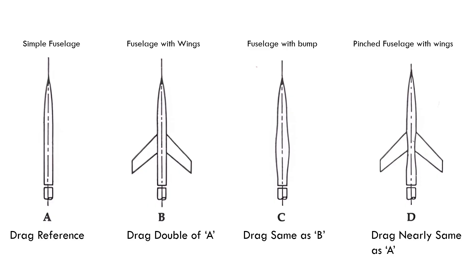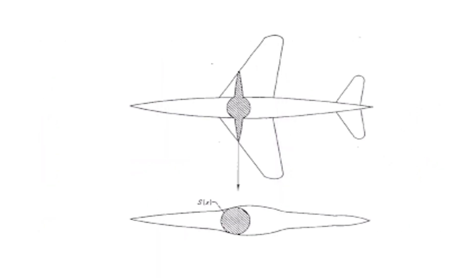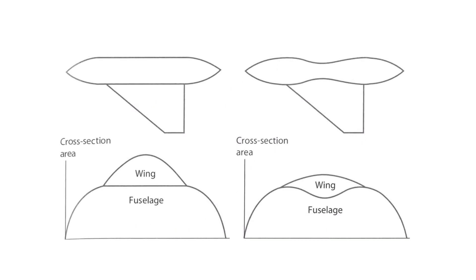However, when he tapered the fuselage around the wings, the overall drag dropped back down to nearly the same level as the original plain cylinder. This led to a crucial insight: minimizing drag at transonic speeds depends on maintaining a smooth and continuous change in cross-sectional area from front to back. The area rule emerged from this, stating that wherever components like wings or tails protrude from an aircraft, the body should be narrowed accordingly to avoid sudden increases in volume, which otherwise generate extra drag.